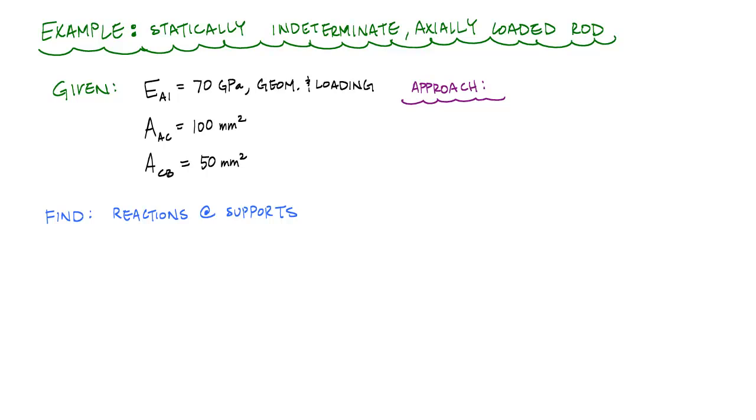we're going to go back to mechanics and materials and look at a statically indeterminate, axially loaded rod, fixed-fixed, made of aluminum with the modulus of elasticity shown. Segment AC will have an area of 100 millimeters squared. Segment CB, 50 millimeters squared.